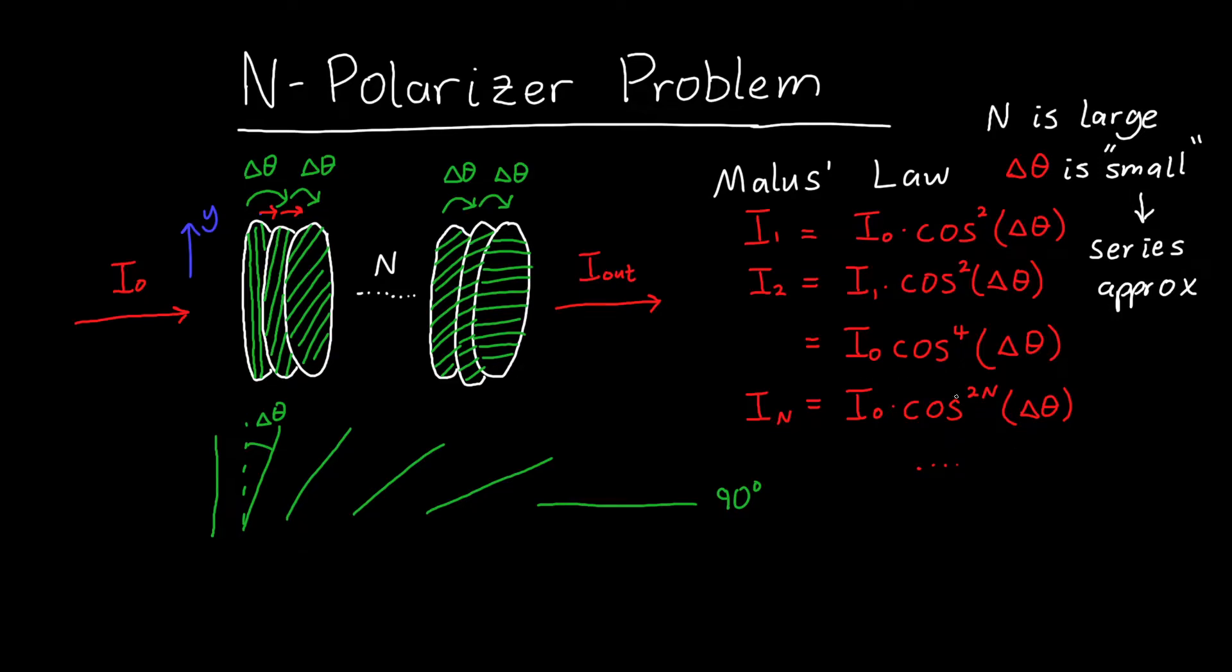If you don't happen to remember off the top of your head what the series approximation is for cosine, and that's totally reasonable, you can look it up, but cosine of x, if x is small, is approximately 1 minus x² over 2.